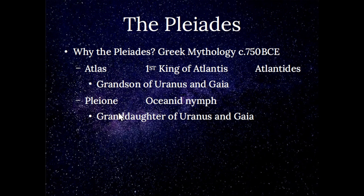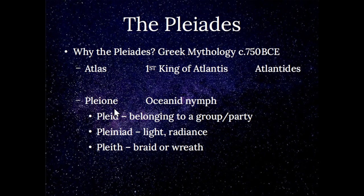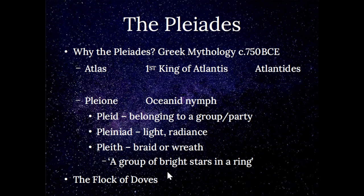Pleione was an Oceanid nymph. The suffix '-one' is Greek and means a female person. In the Welsh language — our living remnant of ancient British — 'ple' means belonging to a group or party, 'pleniad' is light and radiance, and 'plaith' is a braid or a wreath. Together this explains the Pleiades much better than the Greek explanation: a group of bright stars in a ring.